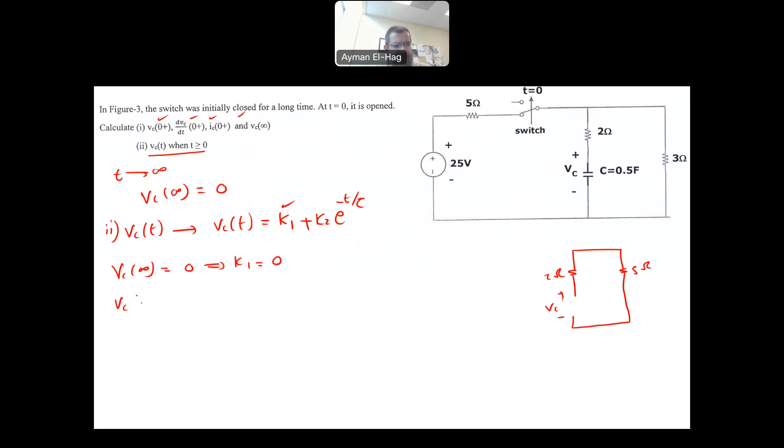Then VC at zero is equal to K1 plus K2. You substitute T equal to zero. And this is equal to 9.375. It means that your K2 is basically equal to 9.375, because K1 is equal to zero. Finally, tau.